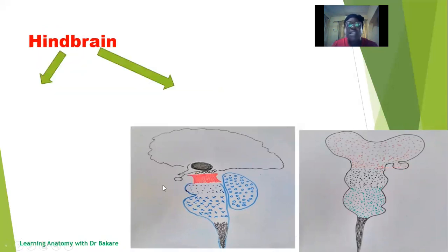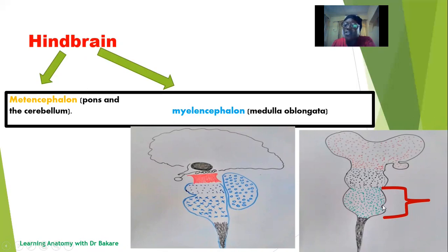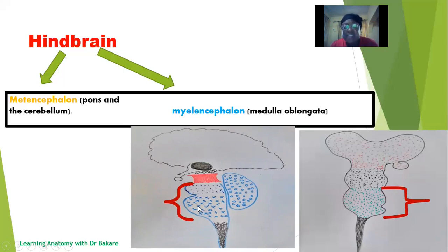The hindbrain is made up of two subunits: the metencephalon and the myelencephalon. The metencephalon becomes the pons and the cerebellum, while the myelencephalon becomes the medulla oblongata. During development, the rhombencephalon is the most distal part of the primary brain vesicle, and it already has a subdivision mark created within it. As development proceeds, it finally becomes the pons, the medulla, and the cerebellum. The upper part — the metencephalon — becomes the pons and the cerebellum, while the inferior part — the myelencephalon — becomes the medulla oblongata. Inferior to the medulla oblongata is the spinal cord. The cerebellum, which is part of the hindbrain, is known for control of movement and balancing.